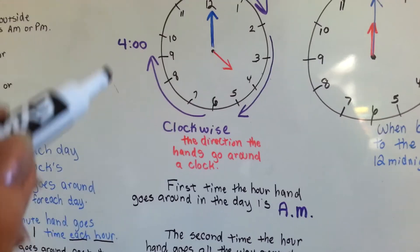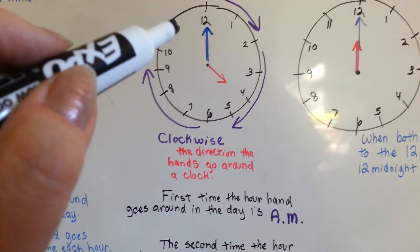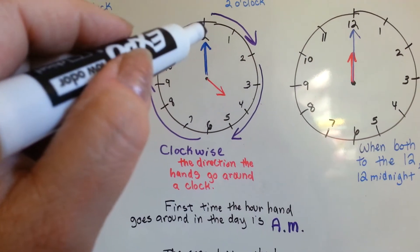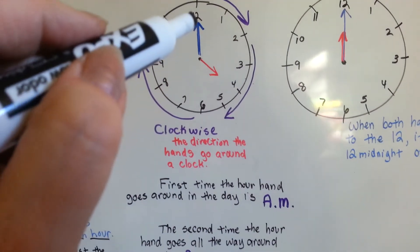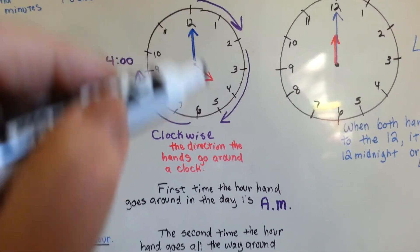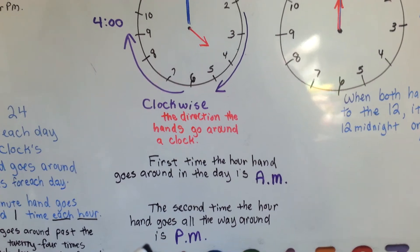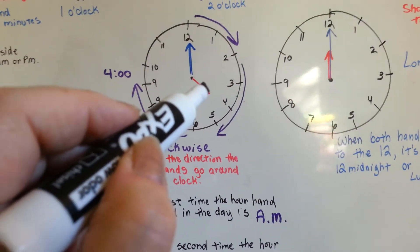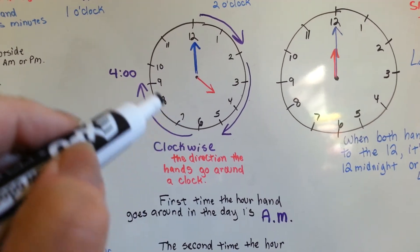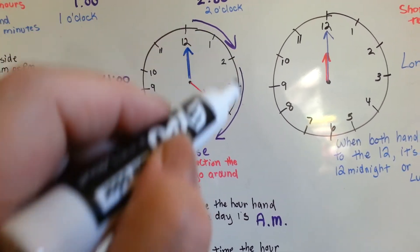The first time the hour hand goes around past the 12 is a.m. And then the second time the hour hand goes past the 12, it's p.m. So this red hour hand is going to go all the way around two times for each day.